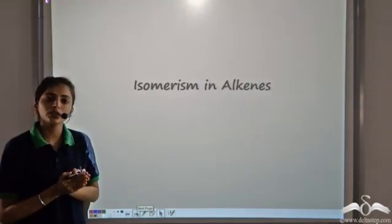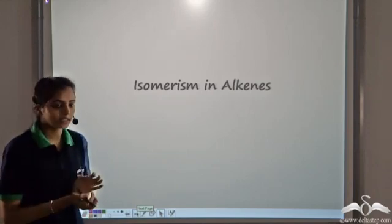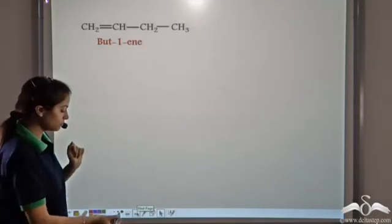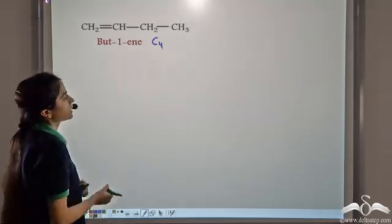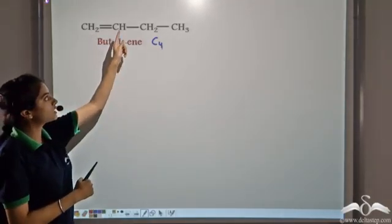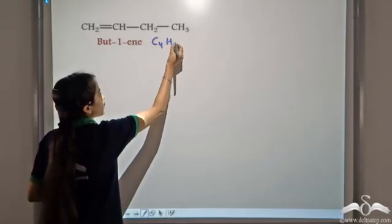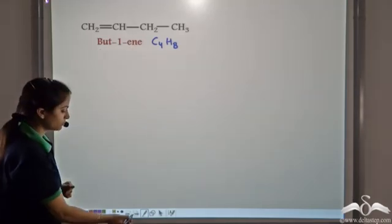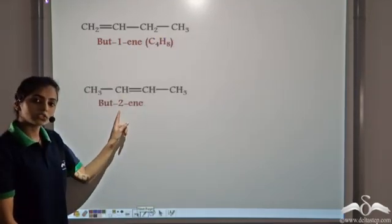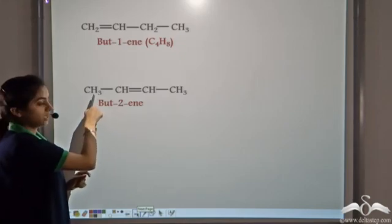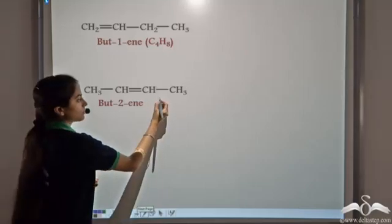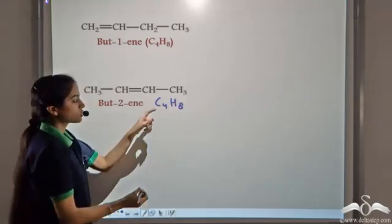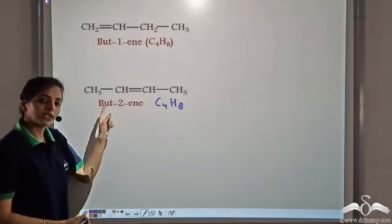Now, what type of isomerism is possible in alkenes? Let's take an example. We have but-1-ene, which has 4 carbon atoms and 8 hydrogen atoms. Since the double bond is present at position 1, we get but-1-ene. We also get another structural formula for the same molecular formula C4H8, again with 4 carbon atoms and 8 hydrogen atoms.